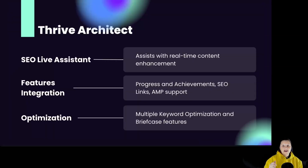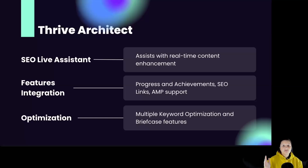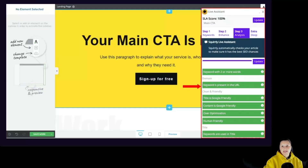Thrive Architect assists with real-time content enhancement using the SEO live assistant. Features include progress and achievements, SEO links, and AMP support. You can optimize for multiple keywords and have access to briefcase features. Thrive Architect benefits from Squarly's SEO live assistant for real-time optimization, with key features like progress and achievements helping to track SEO goals and improvements effectively.